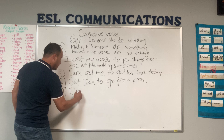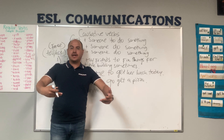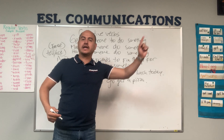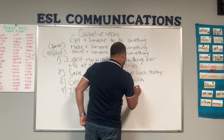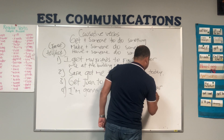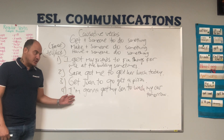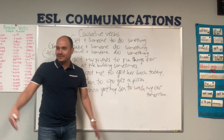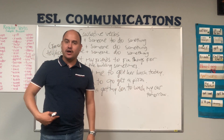In the future tense: I'm gonna get my son to wash my car tomorrow. Le voy a convencer a mi hijo que lave mi carro. I'm gonna get my son to wash my car tomorrow — lo voy a convencer, voy a conseguir.